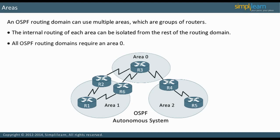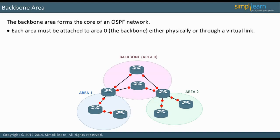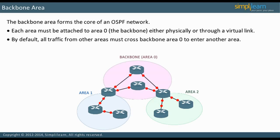All OSPF routing domains require an Area 0. The Backbone area forms the core of an OSPF network. Each area must be attached to Area 0, the Backbone, either physically or through a virtual link. By default, all traffic from other areas must cross Backbone Area 0 to enter another area. The Backbone area must be contiguous — in other words, the area must be in one piece.